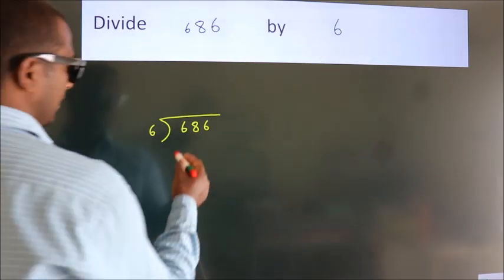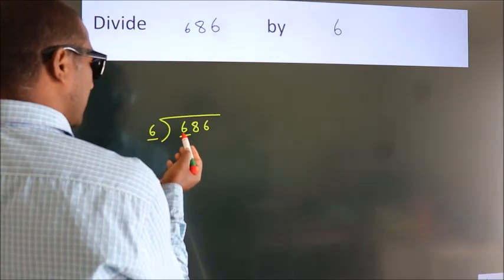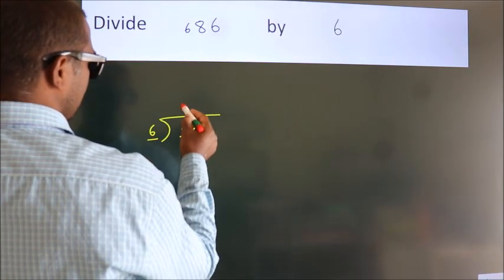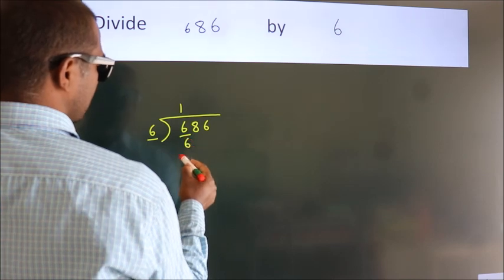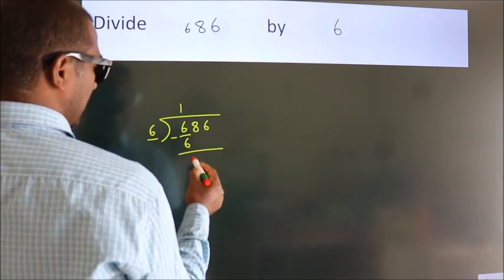Next, here we have 6. Here 6. When do we get 6? In the 6 table, 6 once is 6. Now we should subtract. We get 0.